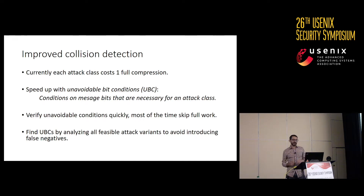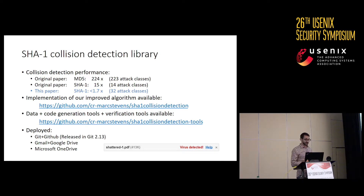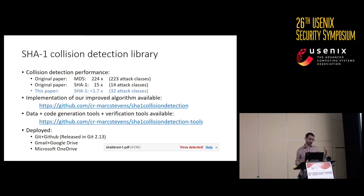We find these UBCs by analyzing all feasible attack variants to avoid introducing false negatives. We have implemented this in a collision detection library released on GitHub, along with the tools used in this analysis. Whereas before the implementation introduced a factor proportional to the number of attack classes — 224 times for MD5, 15 times for SHA-1 — the new library gives us a less than 1.7 times slowdown, and we've increased the number of attack classes checked from 14 to 32.